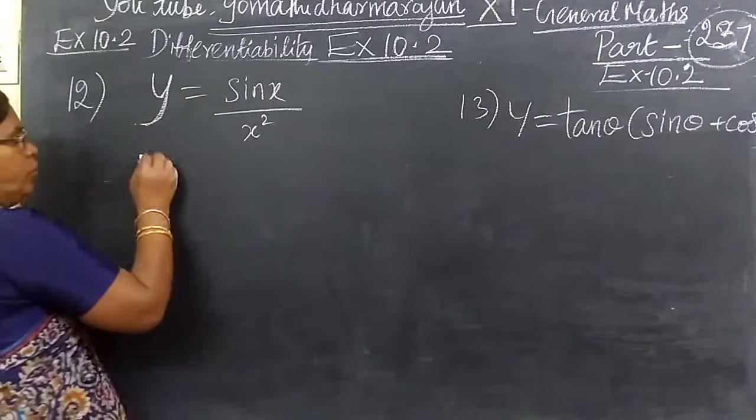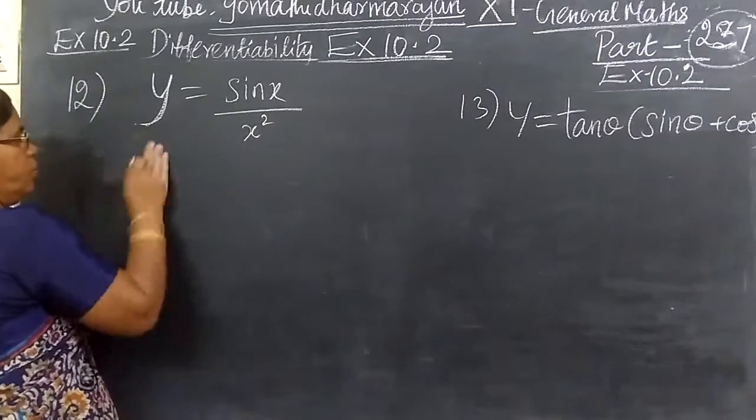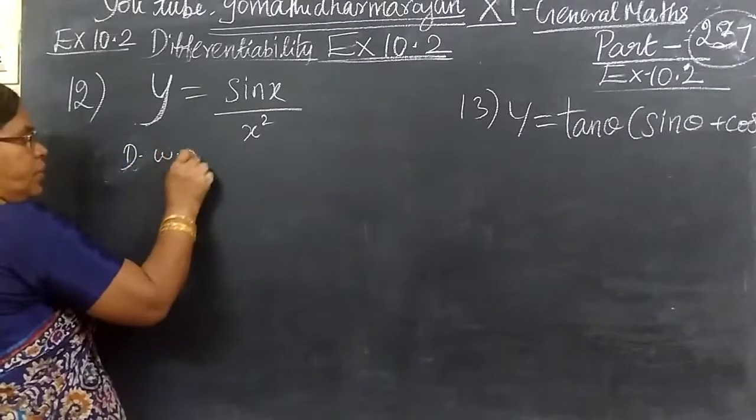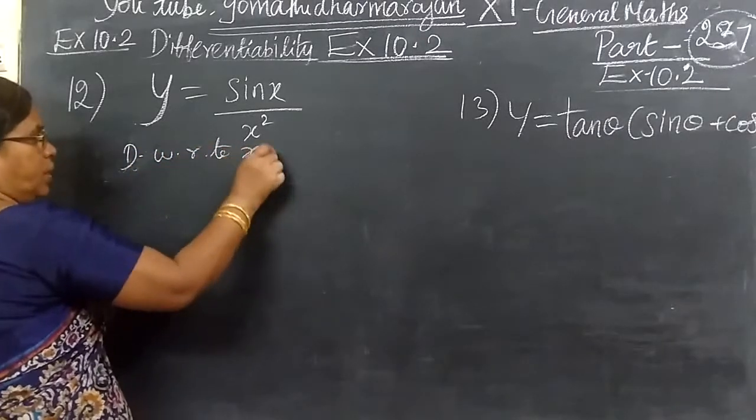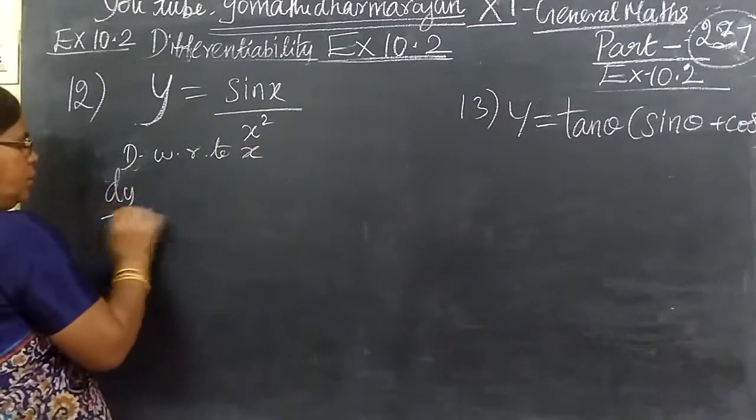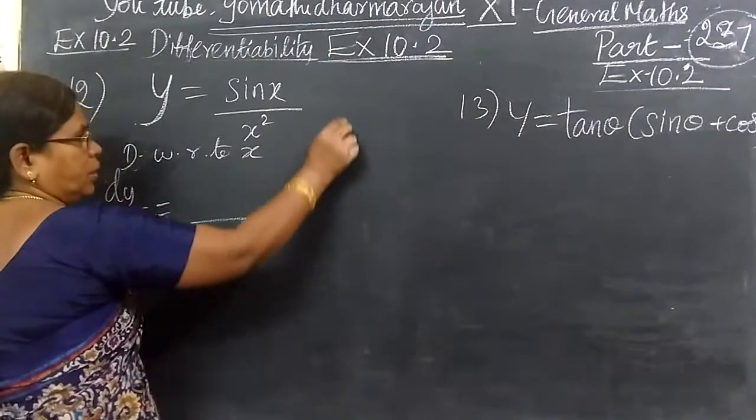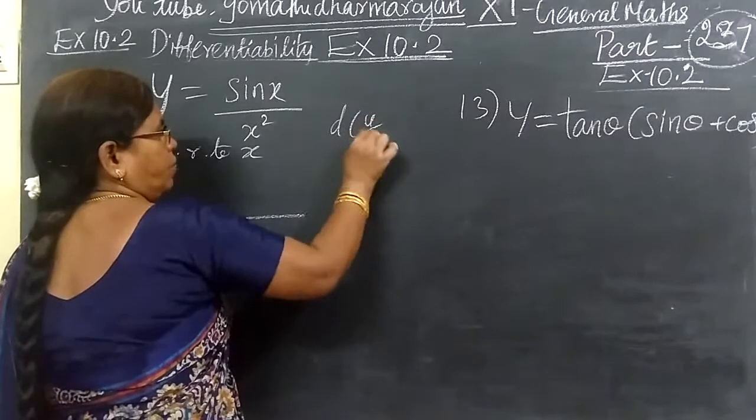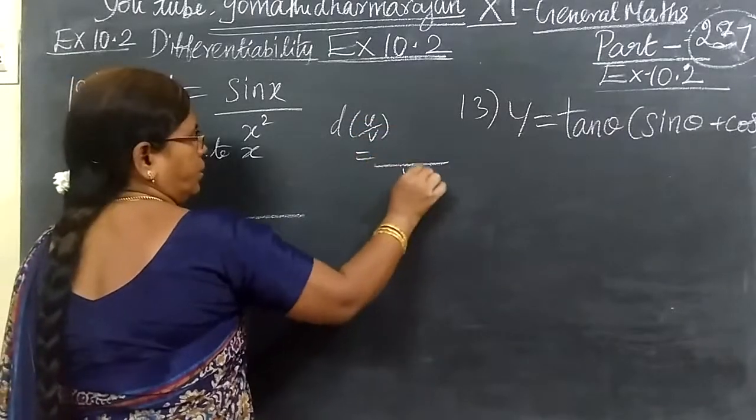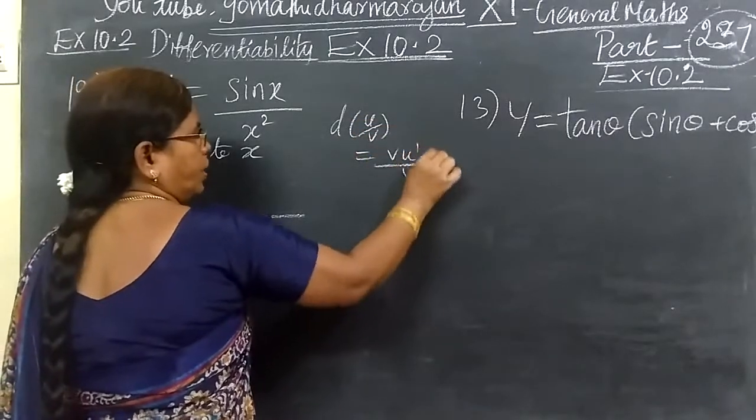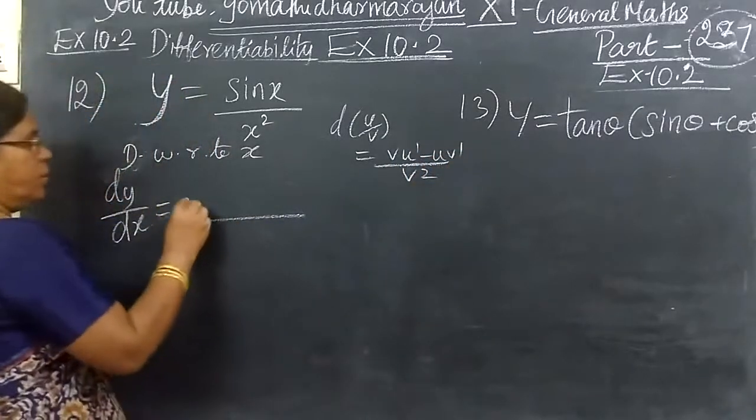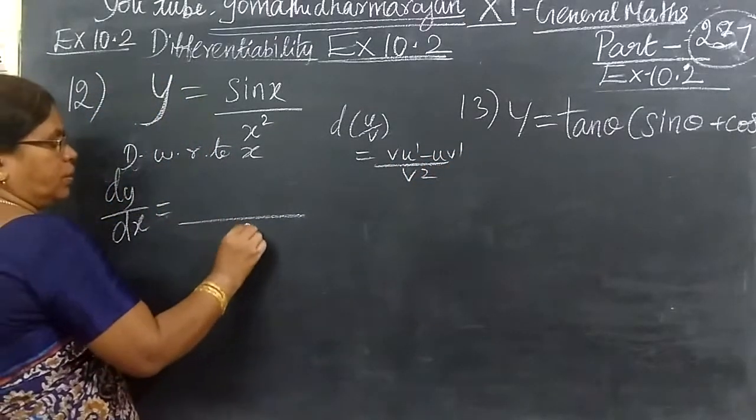Exercise 10.2. This is the differentiation with respect to x. So you are writing dy/dx equals d of u/v equals v squared, v u dash minus u v dash divided by v square.